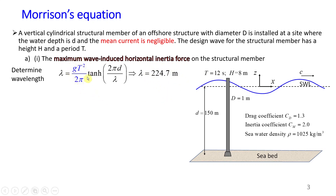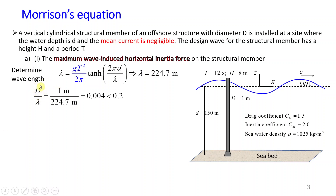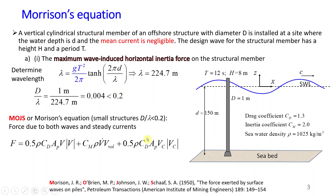Now we need to see if Morrison's equation is applicable. To check, we calculate the ratio of the diameter of the structure, capital D, divided by lambda. This ratio is well below the limit of 0.2. Therefore this is a small structure, because when this ratio is less than 0.2, the structure is defined as a small structure. Therefore, Morrison's equation is applicable and can be used to calculate force due to both waves and steady currents.